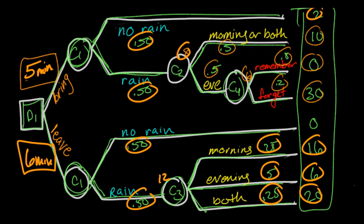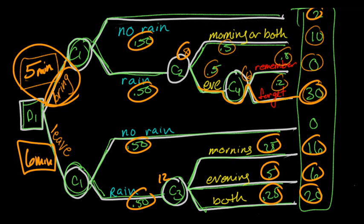We want to minimize the amount of time lost at work, so we select the bring-umbrella option with an expected value of 5 minutes versus 6. We might also want to minimize the worst case: down the bring-umbrella path, the worst case is 30 minutes, and the worst case on the leave path is 20 minutes — so to minimize worst case, we might leave the umbrella. We might also look at the most likely path: in both cases it won't rain, costing 2 minutes if we bring it and 0 minutes if we leave it — so for most likely, we'd decide to leave our umbrella at home.